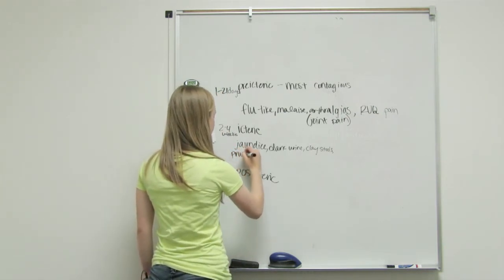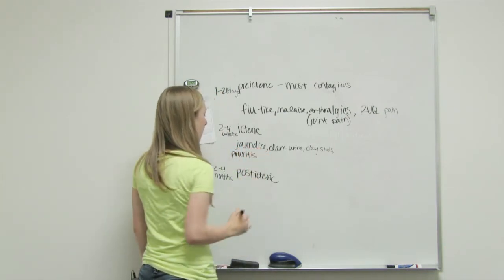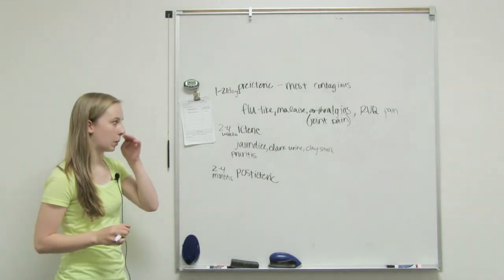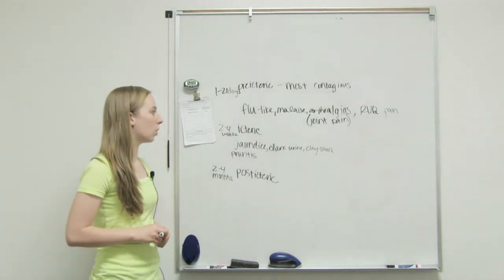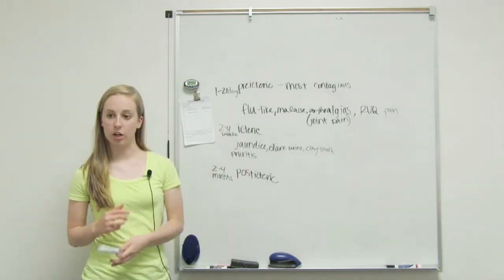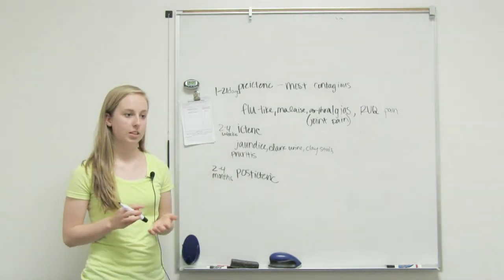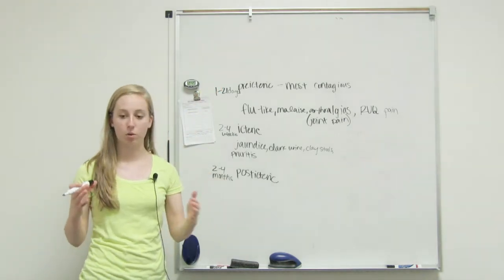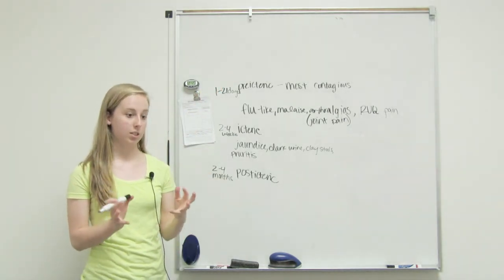What's the name for that? Pruritus, good. Is it PR? Yeah, pruritus. Icteric is just another word for jaundice. Pre-icteric is the phase where we don't have jaundice yet. Icteric is the phase where we've got jaundice.